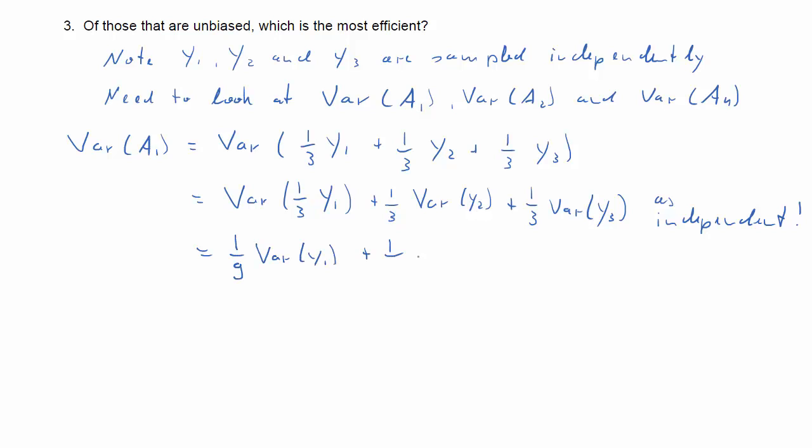And now we can take out the factors, 1 over 3, if we take it out we need to square it. So it will turn into 1 over 9 for each of the three variances. Now the variances of each of the individual ones of the y1, y2 and y3 will all be identical. They will all just be the variance of our random variable y. So we get 1 over 9 times 3 times the variance of y and we are left with a third times the variance of y. So that's the variance of estimator A1.